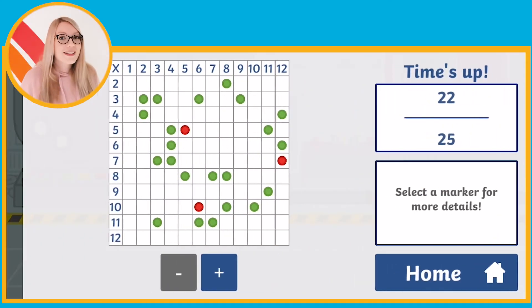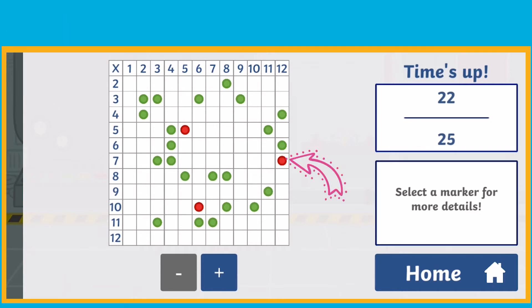When you've completed all the questions, you'll be able to see your results on this page. You can see how many questions you got right and in this grid, you can see which questions were right and which were wrong. A red dot shows a question that you got wrong and a green dot shows a question that you got right.